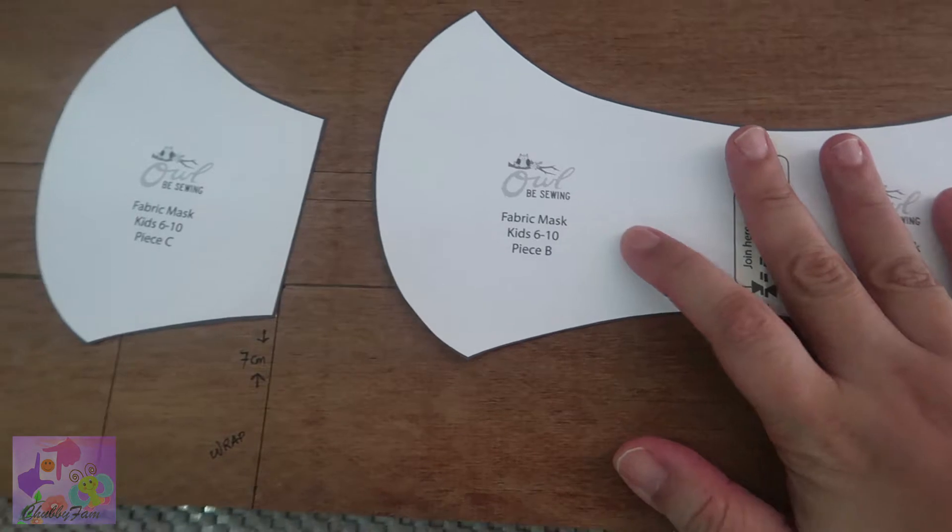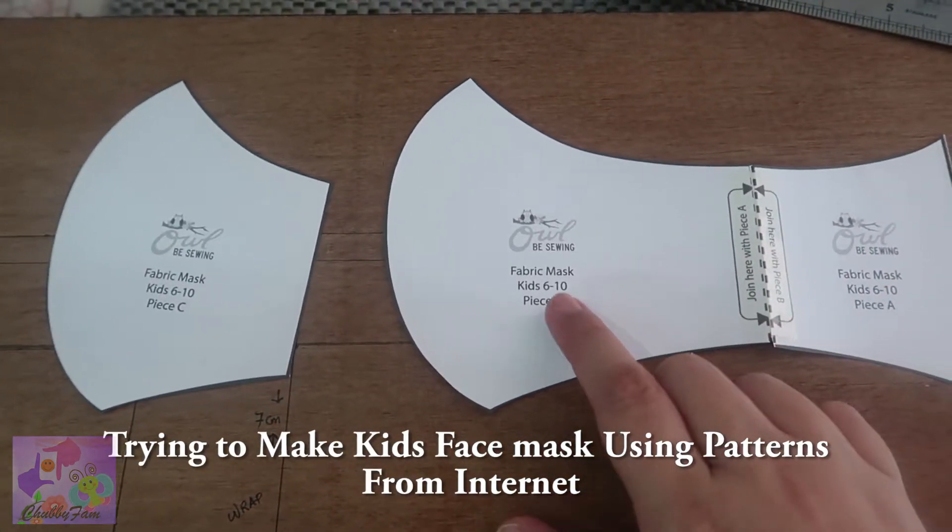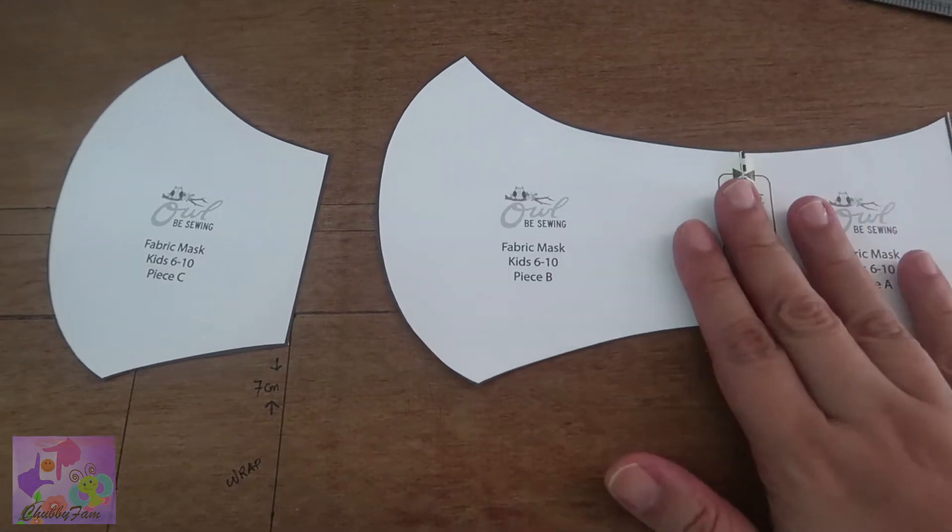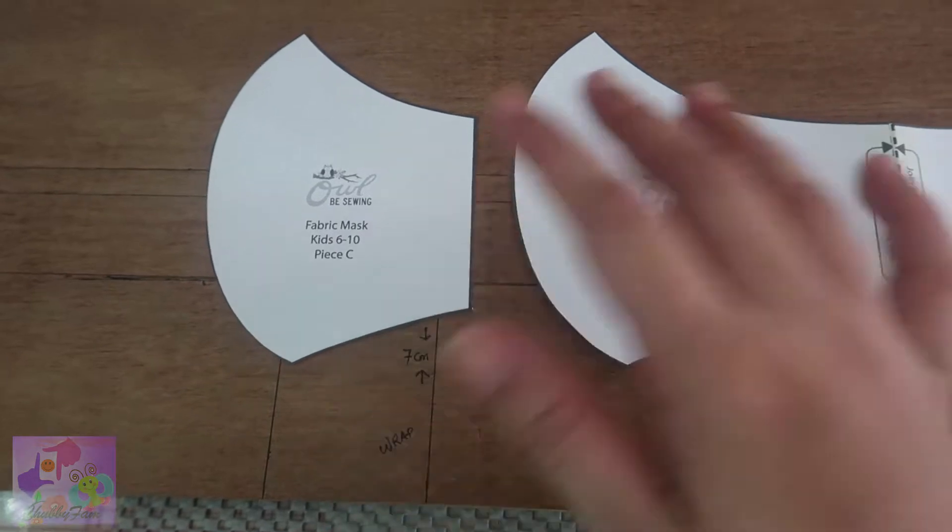So I have a template here which I downloaded from the internet. This one is for kids six to ten. I joined this together and this one will be the inner part of the pocket for the pocket mask.